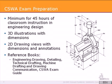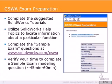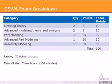How do you prepare? At a minimum, we recommend 45 hours of classroom instruction in engineering design, 3D illustrations and dimensions, 2D drawing views and dimensions and annotations, and a series of reference books — whether in engineering drawing, detailing, technical drafting, machine drafting, drawing and communication, or a CSWA exam guide. To prepare for the exam, we also suggest SolidWorks tutorials, located under Help. There is an example exam located at SolidWorks.com/CSWA. You need to test yourself and complete problems within 45 to 60 minutes.